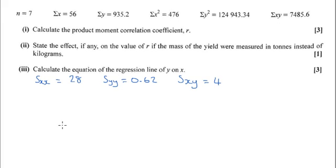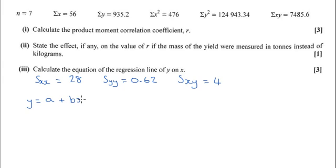Part three wants us to calculate the regression line of y on x. In order to do that we need two things — the regression line is equal to a value called a plus b times x. So we need to calculate this a and b value.